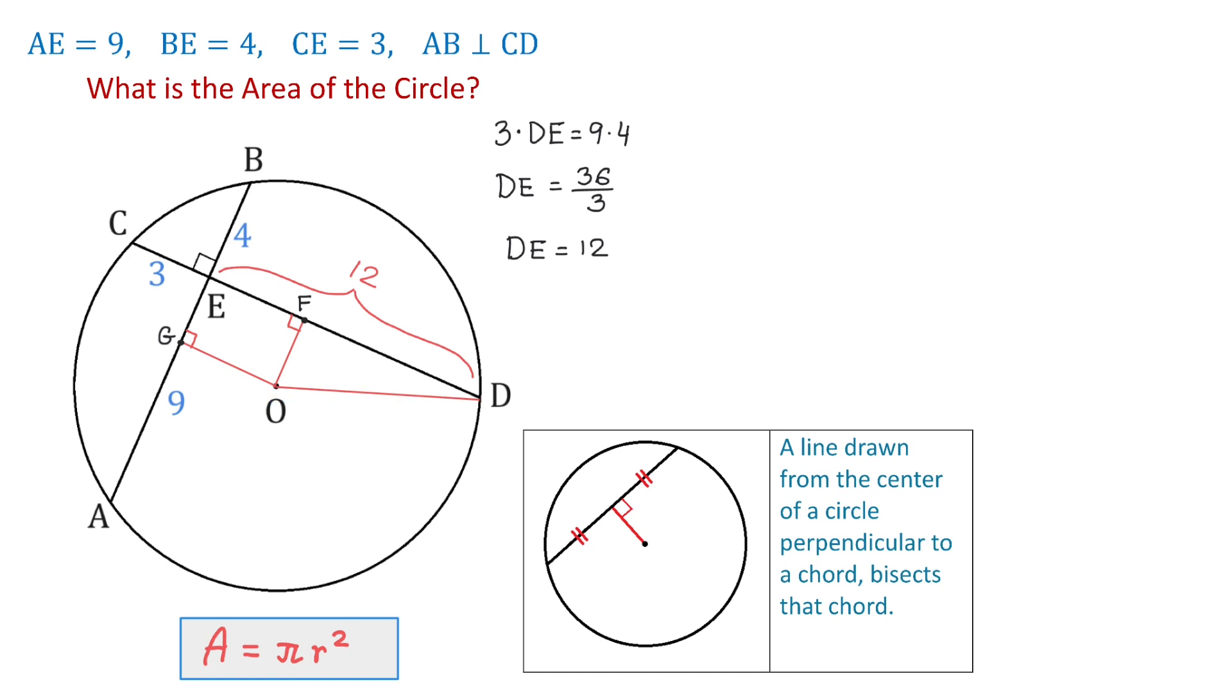First let's find DF. The length of the chord CD is 3 plus 12. CD equals 3 plus 12, and this equals 15.